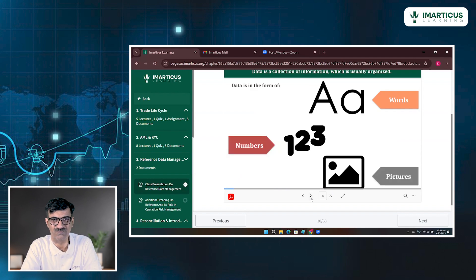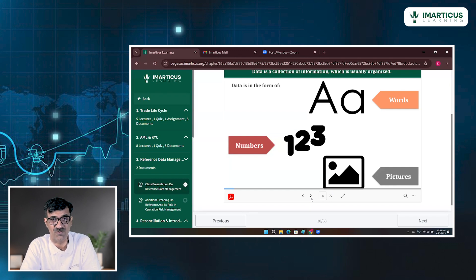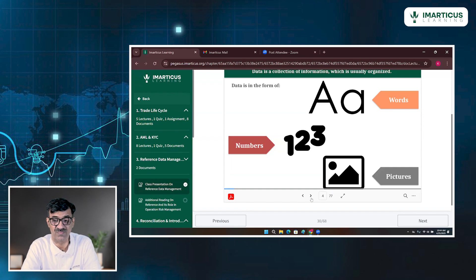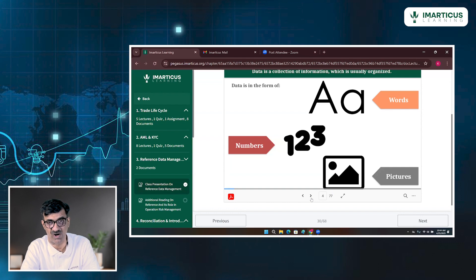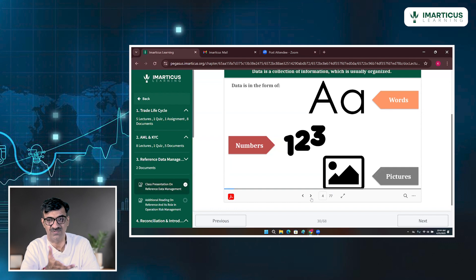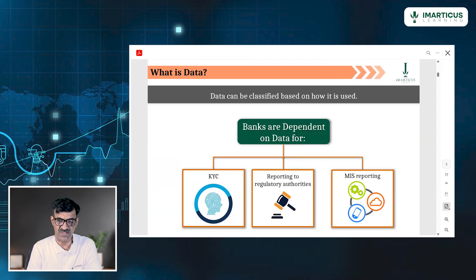What is data? Data is a very interesting thing. Crunching of data, preparing the data, classifying the data — but what is data? Data is a collection of information. Not just a collection of information — they are usually organized. That's what data is. It can be words, it can be numbers, it can be pictures — alphabets. Data can be classified based on how it is used.